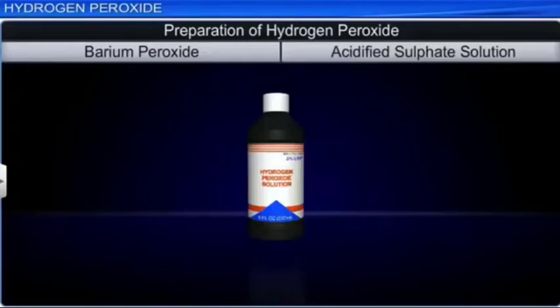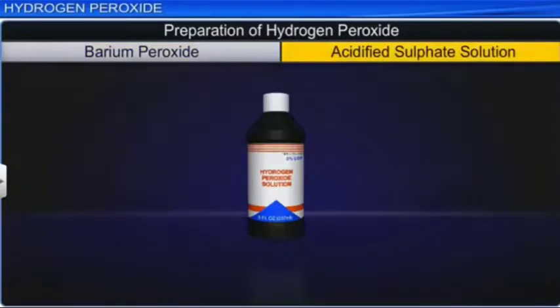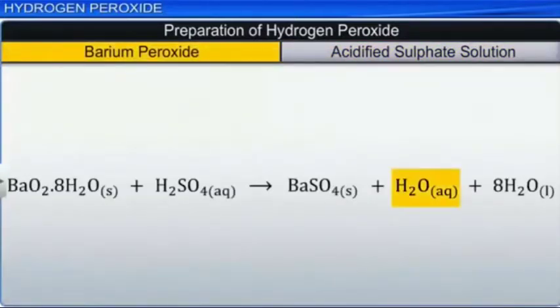In laboratories, hydrogen peroxide is prepared from barium peroxide or acidified sulfate solution. To obtain hydrogen peroxide from barium peroxide, first acidify barium peroxide with sulfuric acid. Barium sulfate is precipitated and an aqueous solution of hydrogen peroxide is produced. The excess water is then removed by evaporating the solution under reduced pressure. This will give us hydrogen peroxide.